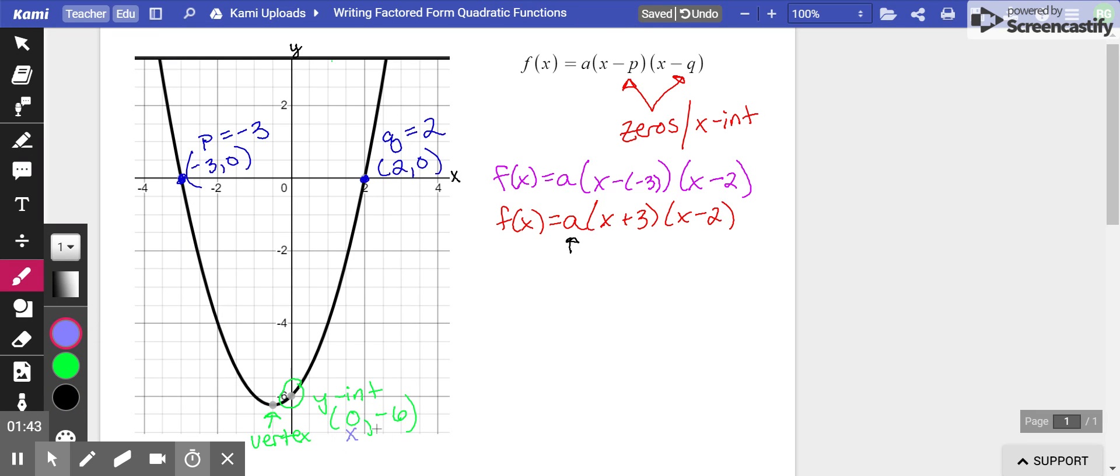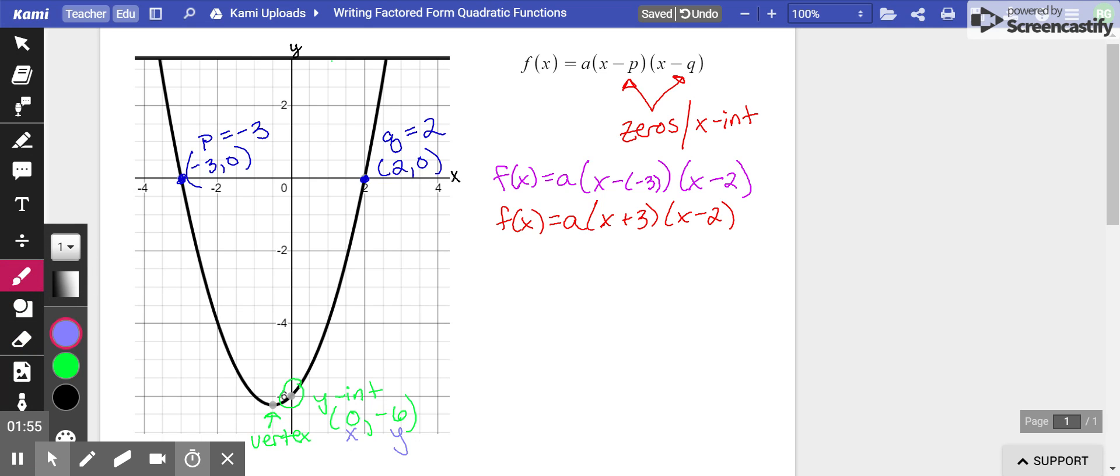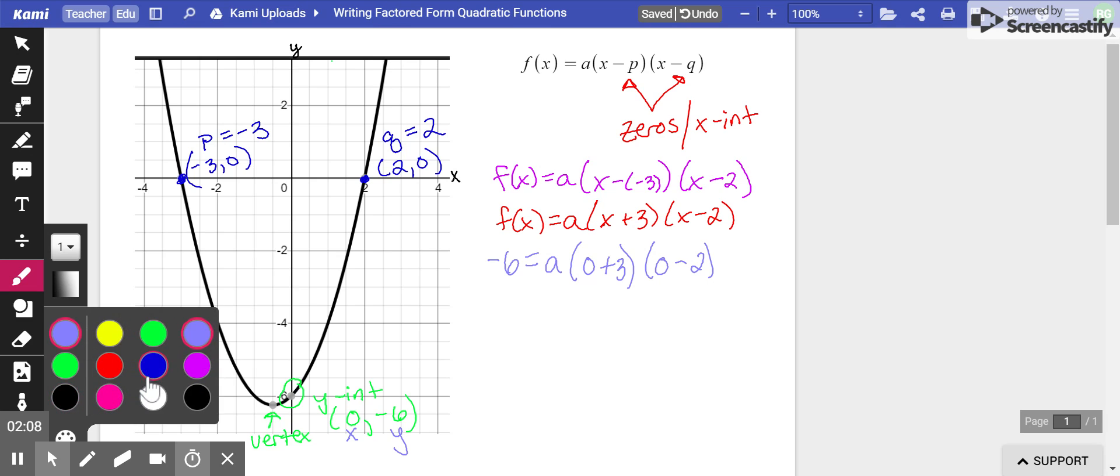The x in this point is 0, the y in this point is negative 6. So those are going to substitute in our equation for the x and the f of x because that's the same thing as y. So y was negative 6, that goes in for f of x. We get negative 6 equals a times x becomes 0 plus 3, and again 0 minus 2. Then you just simplify each one of these parentheses.